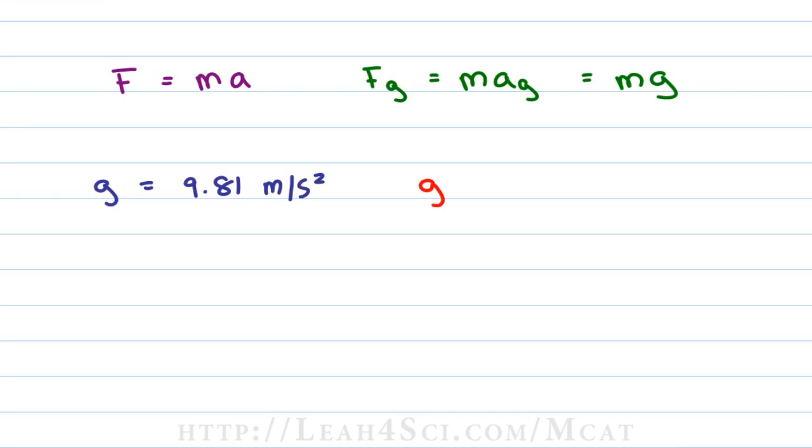But you can't do calculations with this number on the MCAT without a calculator so you want to estimate the acceleration of gravity to be approximately 10 meters per second squared making it very easy to apply to calculations. And notice that the units are meters per second squared just like acceleration.